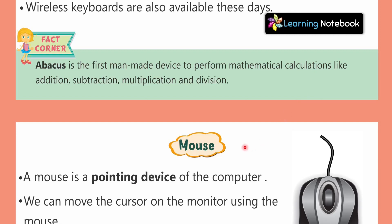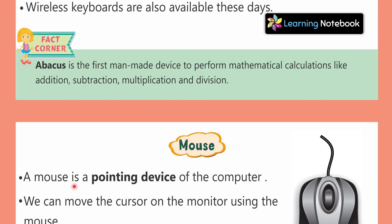Now let's read about the fourth main part of the computer: the mouse. A mouse is a pointing device of the computer. As you can see here, this is the cursor and this is the mouse. If I point something here, it is the mouse that is doing that pointing.